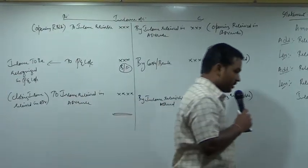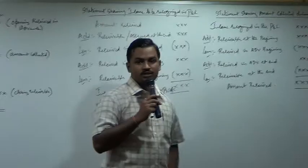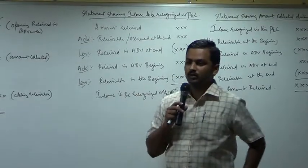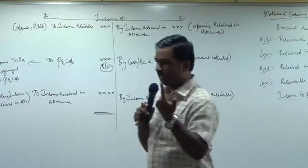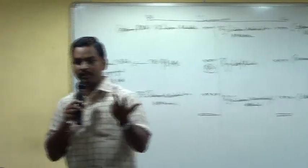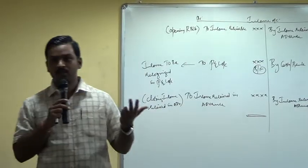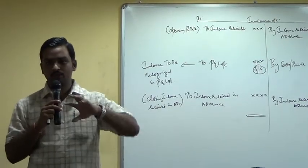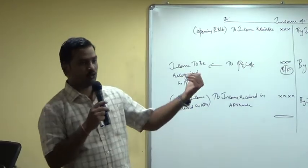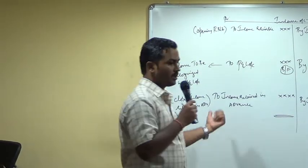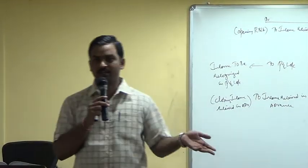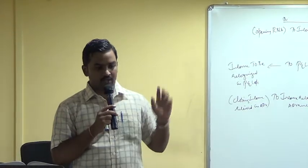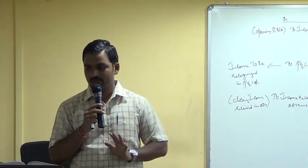With this we complete the discussion on income account. You should understand how to prepare an income account, how to calculate income to be recognized in the P&L account when amount collected, receivable at the beginning and at the end, and received in advance at the beginning and at the end is given to you. And from the same calculation we should also be able to derive amount collected if you know the amount of income recognized in the P&L account. You have to be thorough with this concept.